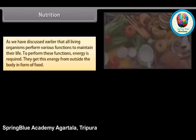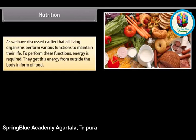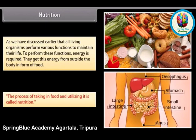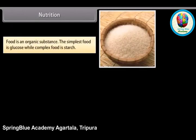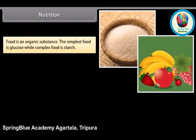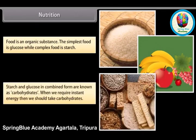All living organisms perform various functions to maintain their life. To perform these functions, energy is required. They get this energy from outside the body in the form of food. The process of taking in food and utilizing it is called nutrition. Food is an organic substance; the simplest food is glucose while complex food is starch. Starch and glucose in combined form are known as carbohydrates.